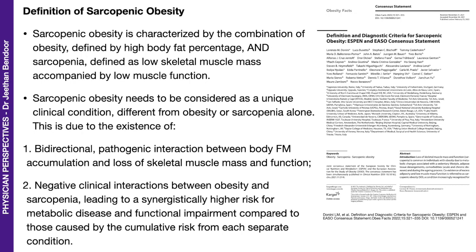Sarcopenic obesity — sarcopenia and obesity — is characterized by the combination of obesity, defined by high body fat percentage, and sarcopenia, defined as low skeletal muscle mass accompanied by low muscle function.